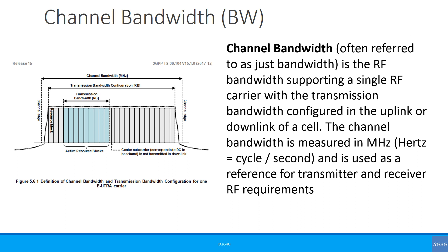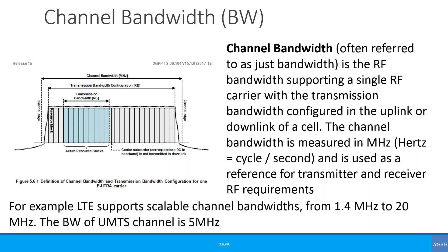Channel bandwidth is the RF bandwidth supporting a single RF carrier with the transmission bandwidth configured in the uplink or downlink of a cell. It is measured in megahertz and is used as a reference for transmitter and receiver RF requirements. For example, LTE supports scalable channel bandwidth from 1.4 MHz to 20 MHz, and the UMTS channel bandwidth is 5 MHz.